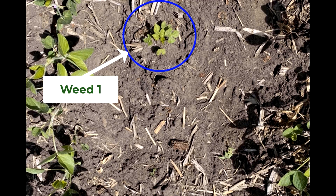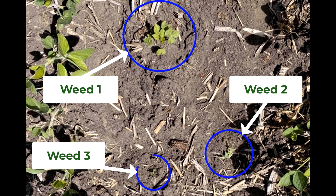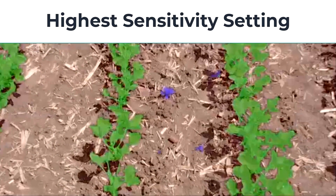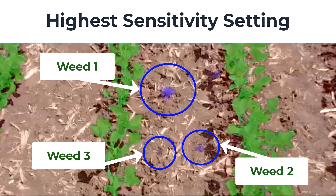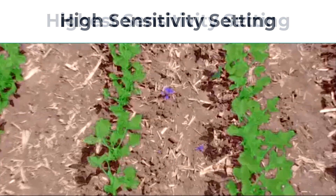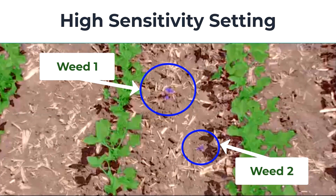Looking at a plain image of this field, it is fairly easy to identify the first weed, but we may have to look a little closer to realize there are actually three weeds present. In fact, weed three is roughly the size of a penny. Looking at the weeds through the diagnostic tool on the highest sensitivity, the system identifies all three weeds easily, but also shows a false positive. This is due to the system requiring a lower level of certainty to identify a plant as a weed.